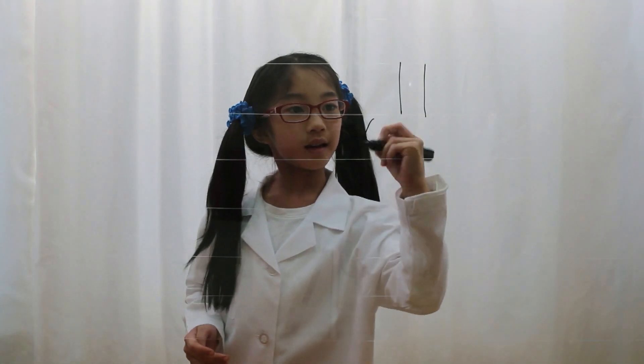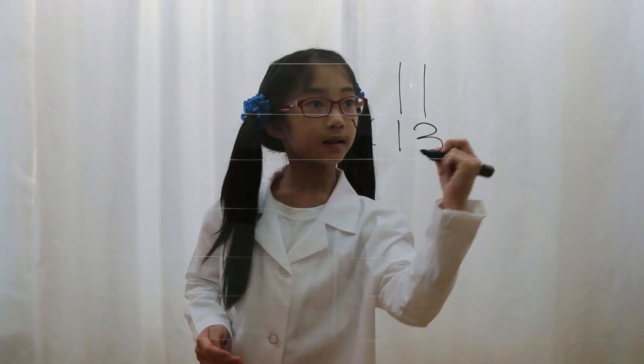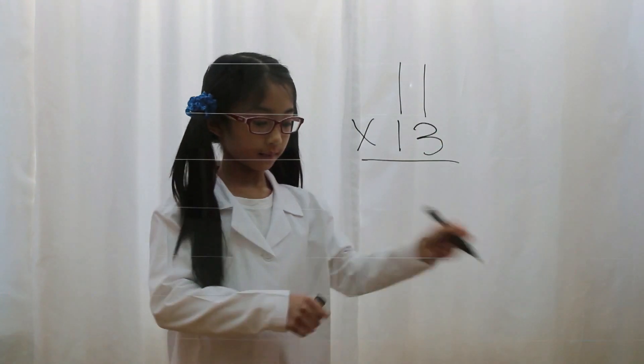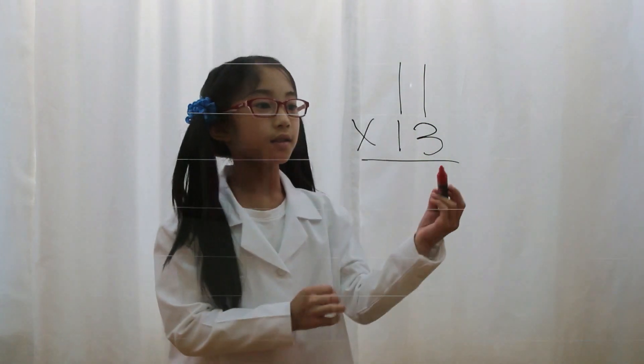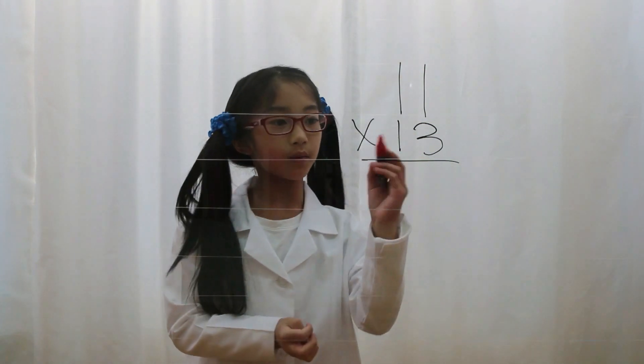Let's say you have 11 times 13. First you look at the 13 and write the first digit down, which is 1. Then you skip a space, and you write the second digit, which is 3.